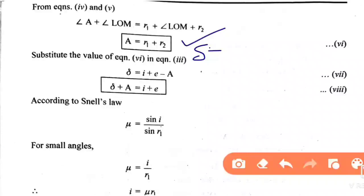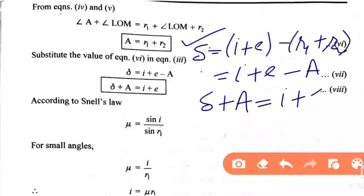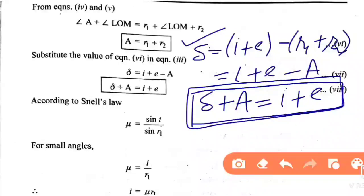Substituting r1 + r2 = A into equation 3: delta = i + e - A. Rearranging, delta + A = i + e. Up to this point, the derivation is exactly the same as the regular prism article — there is no difference so far.